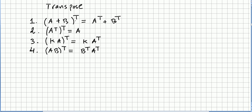(A + B) transpose is the same as A transpose plus B transpose. Please be careful — as we saw in the previous video, this is not the same as the multiplication case, where (A times B) transpose is equal to B transpose times A transpose. Please check the previous video. So addition is different.